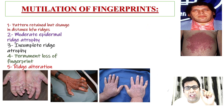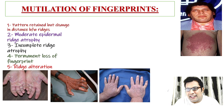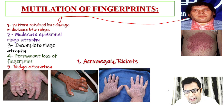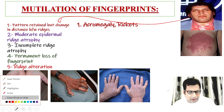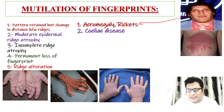An important topic: mutilation of fingerprints. There are 5 important conditions according to Kasavanath and Reddy 33rd edition. First, the fingerprint pattern is retained but the distance between the ridges is increased or altered — seen in acromegaly and rickets. Second, moderate epidermal ridge atrophy — seen in celiac disease. Third, dermatitis herpetiformis, which causes incomplete ridge atrophy.